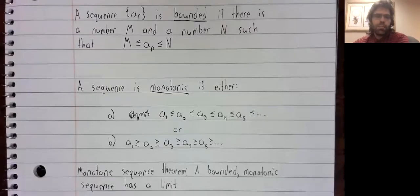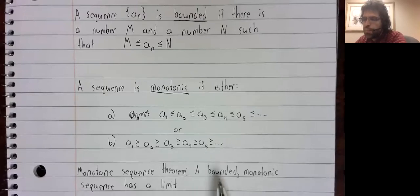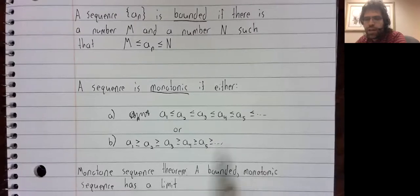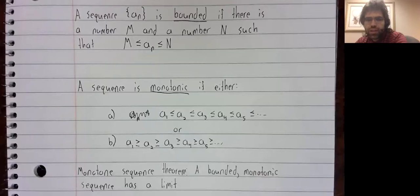The monotone sequence theorem says that a bounded monotonic sequence converges. It has a limit.